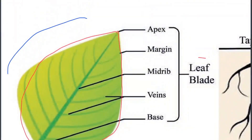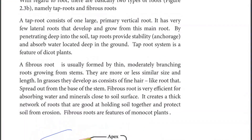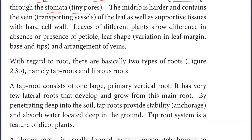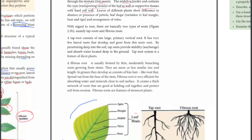It creates a short distance for gas exchange through the stomata, or tiny pores. The gases involved are oxygen and carbon dioxide. The midrib contains veins for transporting substances, as well as supportive tissue with hard cells.